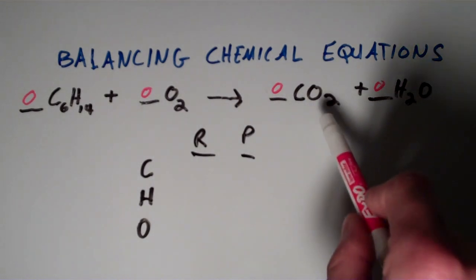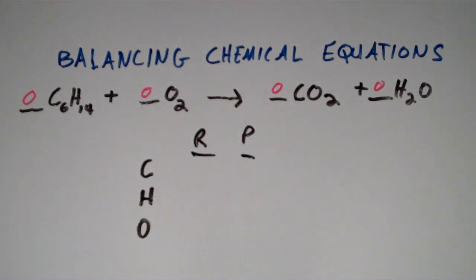It has six, whereas this side only has one. So what we're going to do is we're going to take that chemical species that has the most number of carbons, which is hexane, and we're going to give it a coefficient of one.